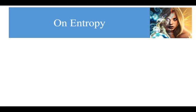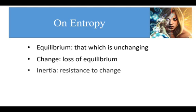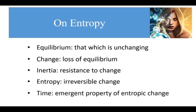So now we can add entropy to our list of definitions defined in terms of change. Equilibrium is that which is unchanging. Change is loss of equilibrium. Inertia is resistance to change, or resistance to loss of equilibrium. Entropy is irreversible change, or change that cannot be undone. And time, as always, is an emergent property of change — specifically, an emergent property of entropic change.